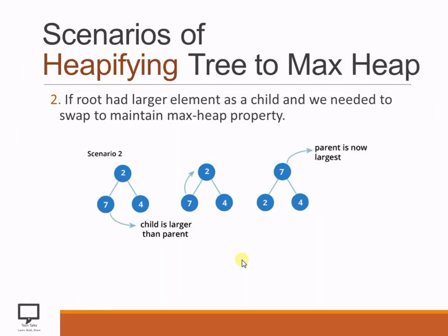If scenario one is there — parent is already the largest — then no need to perform any task, keep it as it is. Now the second scenario: if the root has a larger element as a child, we need to swap to maintain the Max Hip property. The root is not having the larger value; the child is larger than the parent. A child node having a larger value than the parent is not allowed in the Max Hip tree. So we need to swap both elements. After swapping, 7 becomes the parent node and 2 becomes its child — now 7 is the parent which is larger than its children, satisfying the Max Hip property.